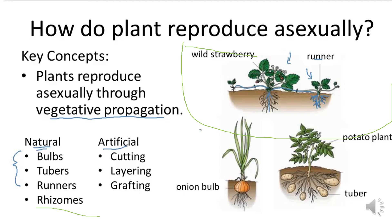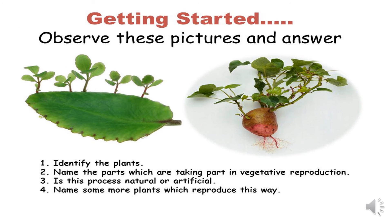Artificial propagation includes cutting, layering, and grafting, which we will discuss in the next slide. This is the picture of bryophyllum, which is commonly called the ajuba plant.